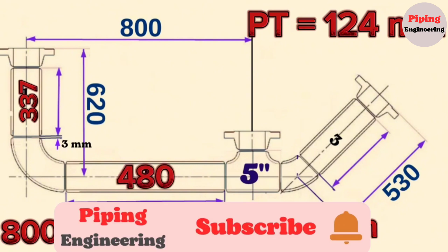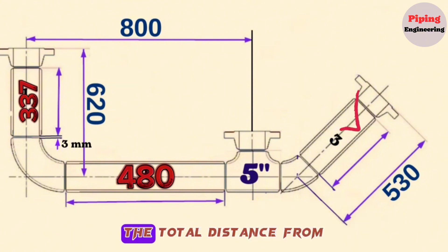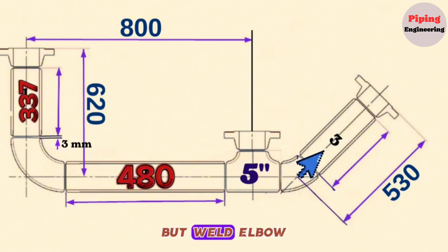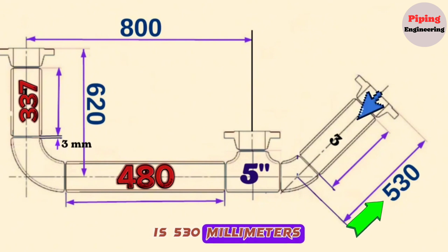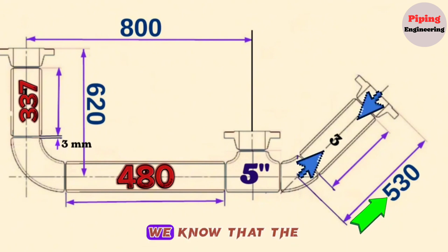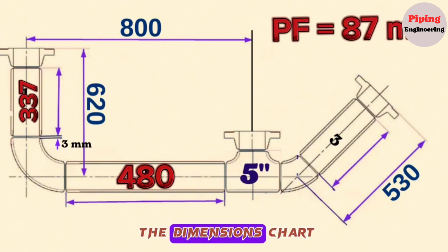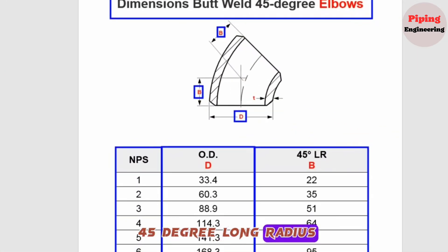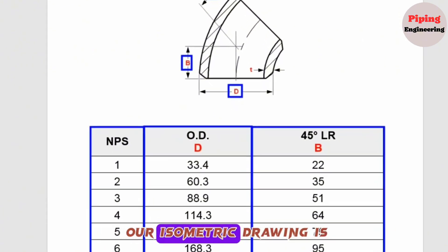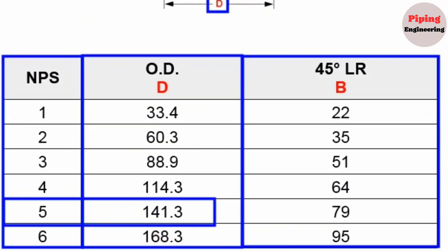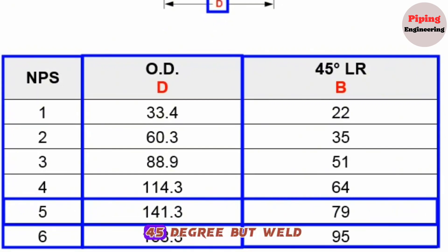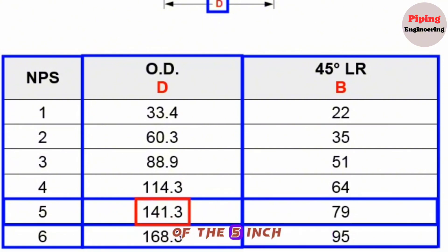Now let's calculate the length of the 5-inch pipe piece Item 3 used in the fabrication of this pipeline. In this section of the pipeline, the total distance from the center of the 45-degree butt weld elbow to the face of the weld neck flange is 530 mm. We already know the 5-inch weld neck flange length is 87 mm. Looking at the 45-degree long radius butt weld elbow chart for 5 inch: outside diameter is 141.3 mm, and center-to-end is 79 mm.